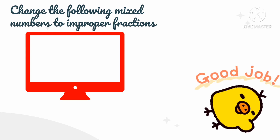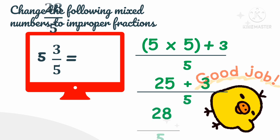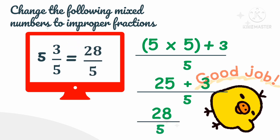Let's have some practice exercises on changing mixed numbers to improper fractions. For example, 5 and 3 over 5. This is a mixed number because it has a combination of a whole number and a fraction. To change this to an improper fraction, we multiply the denominator by the whole number, then add the numerator. So 5 times 5 plus 3 over 5. Simplifying: 5 times 5 is 25, plus 3 is 28, and we copy the denominator 5. Therefore, 5 and 3 over 5 as an improper fraction is 28 over 5.